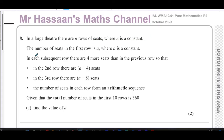The number of seats in the first row is a, where a is a constant. In each subsequent row there are four more seats than in the previous row, so that in the second row there are a plus four seats, in the third row there are a plus eight seats, and so on. The number of seats in each row forms an arithmetic sequence. Given that the total number of seats in the first 10 rows is 360, find the value of a.